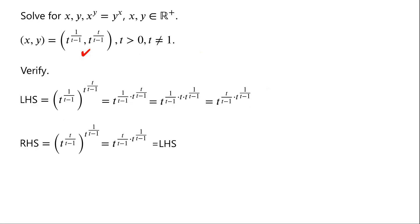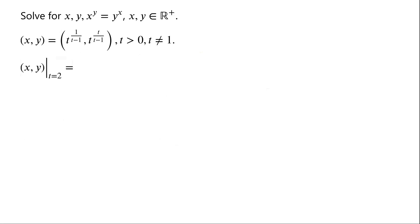Next we will see some example solutions. A solution for t equals 2: since 2 to the power of 1 over (2 minus 1) equals 2, and 2 to the power of 2 over (2 minus 1) equals 2 squared, which is 4. So the solution for t equals 2 is (2, 4).